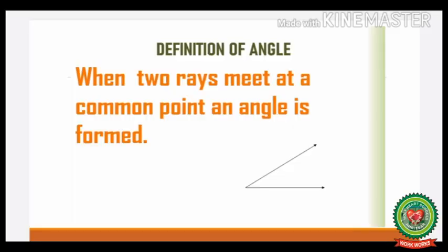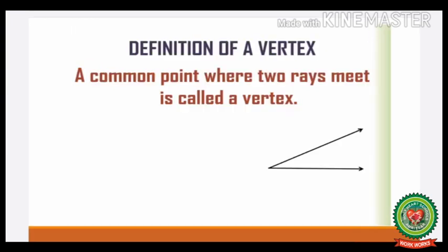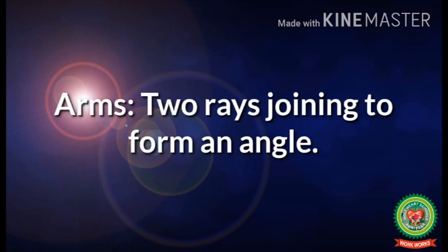First of all, let us discuss what is the definition of angle. When two rays meet at a common point, an angle is formed. A common point where two rays meet is called a vertex. Arms are two rays joining to form an angle.